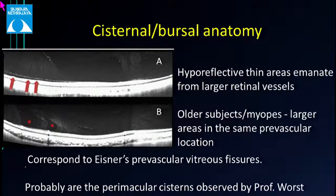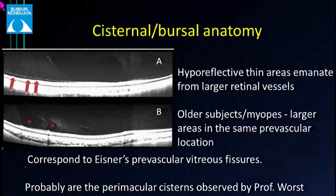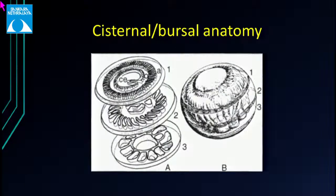Prevascular thin fissures radiate upwards from second or third order vessels, more common in older subjects and myopes — probably corresponding to the premacular cisterns described by Professor Worst. He identified three orders of cisterns: first order with 72 cisterns near the ciliary body; second order with 36 cisterns in the mid-vitreous cavity; and approximately 12 cisterns around the premacular bursa.